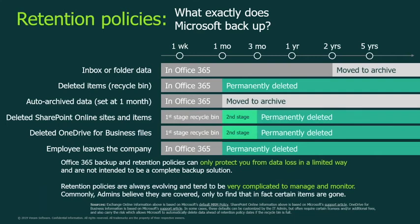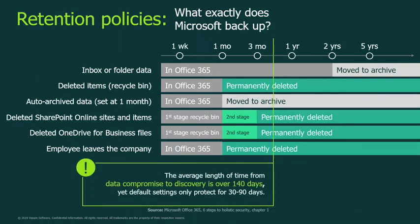What does Microsoft actually back up? For inbox, once you delete data it goes into a 30-day recycle bin, then it's permanently deleted. For SharePoint, you get a first-stage recycle bin and then up to 90 days in a second stage before permanent deletion. The same applies to OneDrive — and if an employee leaves and you remove their license, that data gets deleted too. The average time from data being compromised to discovering the loss is 140 days, yet the default setting only covers 30 to 90 days. By the time you notice, you've lost the data with no way to get it back.